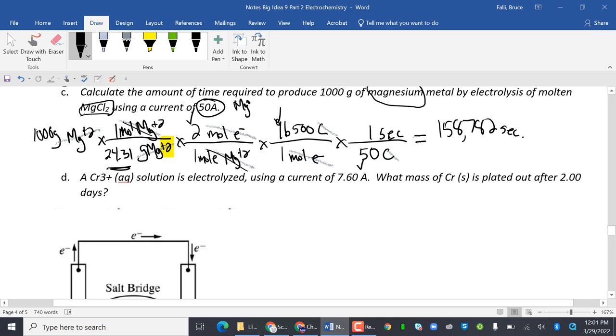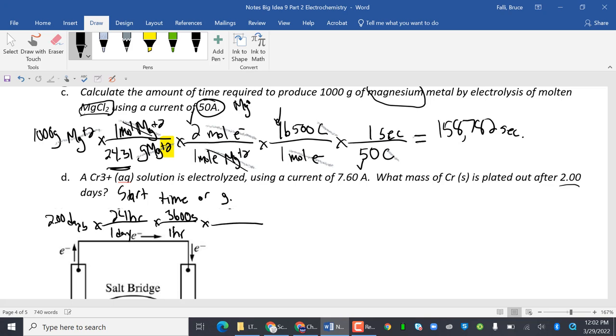Next one, which is the same thing, but playing around with a different way. Chromium plus 3 solution is electrolyzed using a current of 7.60 amps. What is the mass of chromium plated out after two days? So remember, you're always going to start with time. Our time is 2.00 days. So I have to get rid of days. One day is 24 hours. One hour is, I'm going to take a shortcut, 3,600 seconds. If you don't believe me, tough noogies, go look it up. One hour is 3,600 seconds.